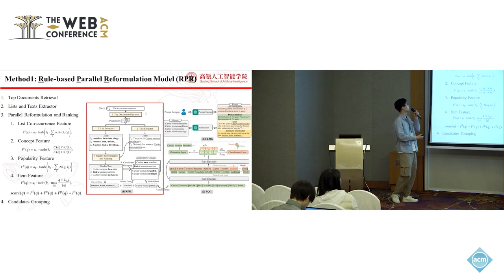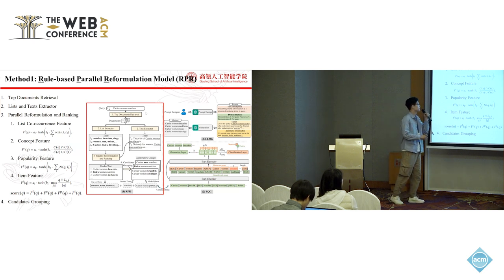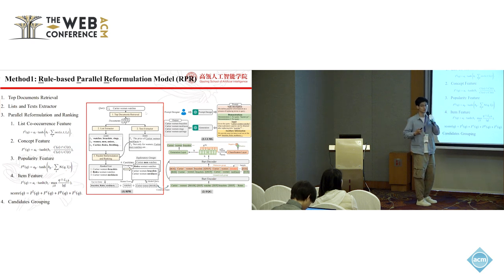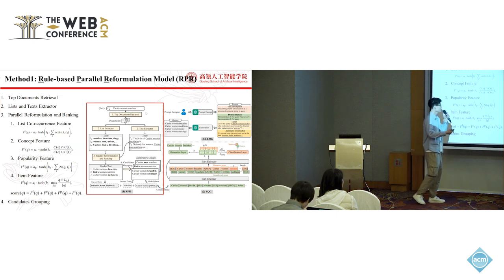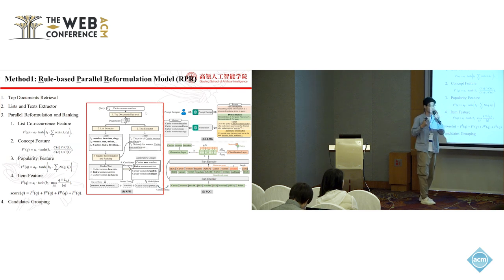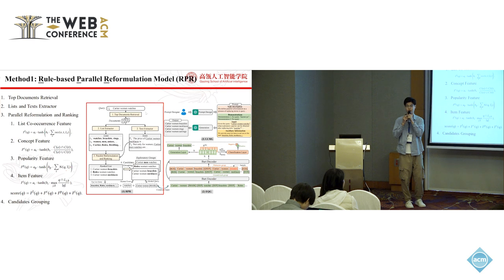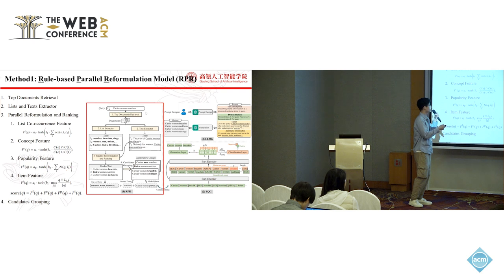The first method is a rule-based parallel reformulation model named RPR. Given a user query, this method uses the list items extracted from the query-retrieved documents to reformulate the user queries so as to obtain the corresponding exploratory queries. It consists of four steps. The first step is top documents retrieval — we use Bing Search API to retrieve the top N documents of the user queries. The second step is list and text extraction — we crawl the HTML of each retrieved document and extract all the lists and texts from it.